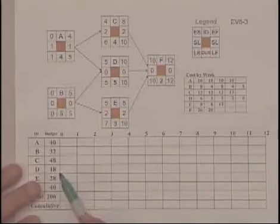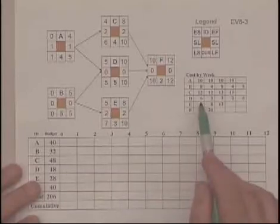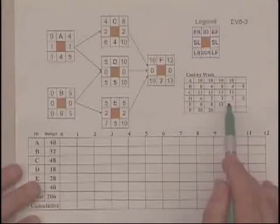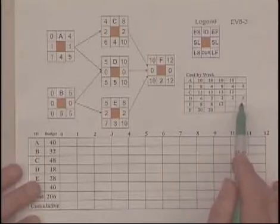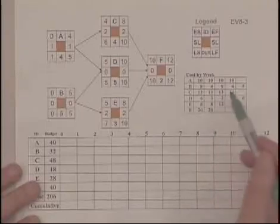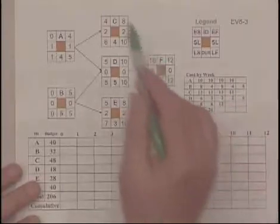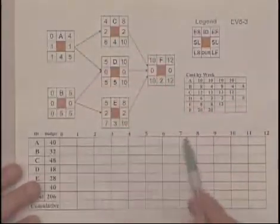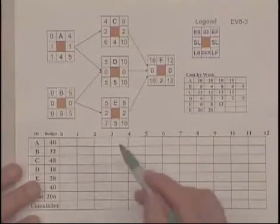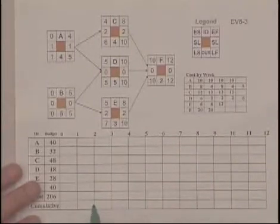Activity D is $18,000 initially: $6,000 the first month, $2,000 for the next three months, and then $6,000 at the end. You can make sense of the remaining figures there. So we want to take this information, utilize the schedule here, and create a time-phased budget for this schedule so we know how much is going to be spent for each of the time periods during the duration of this project.